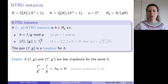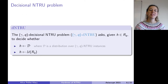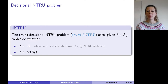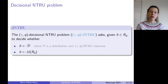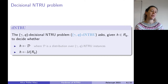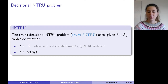Now I can define the different variants of the NTRU problem. The decisional variant is what you'd expect: you are given an element H which is either uniform modulo Q or sampled from some distribution over NTRU instances, and you are asked to distinguish if H is an NTRU instance or uniform.